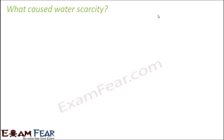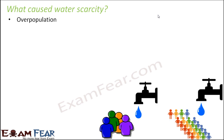One reason for water scarcity is overpopulation. As the population increases, water resources are not increasing at the same rate. Primary sources of water depend heavily on rainfall, and how much rainfall occurs depends on many environmental factors. Water resources are limited, but the population is continuously increasing, so the need for water keeps growing.